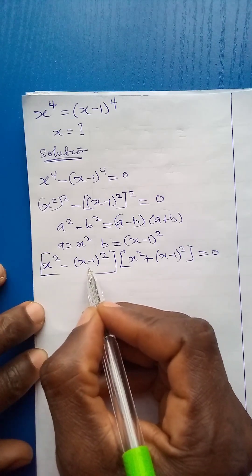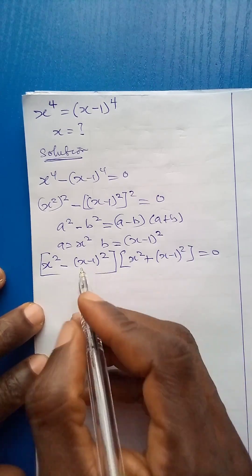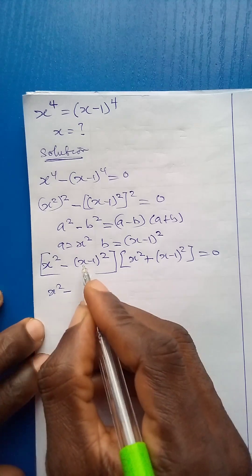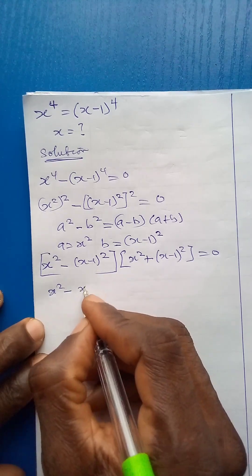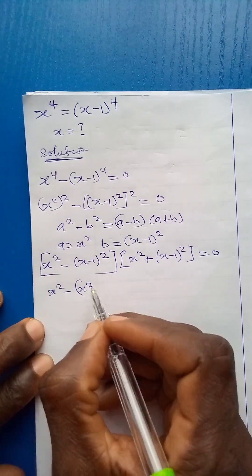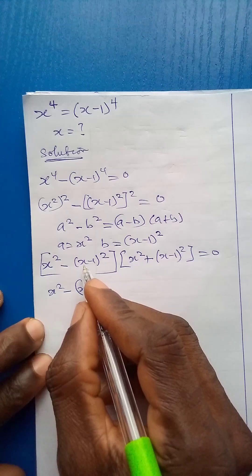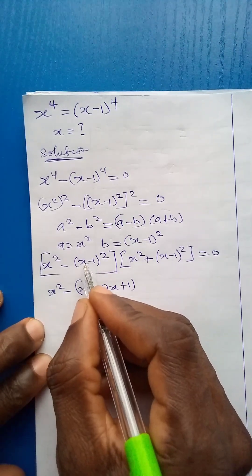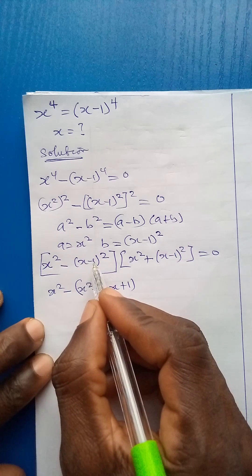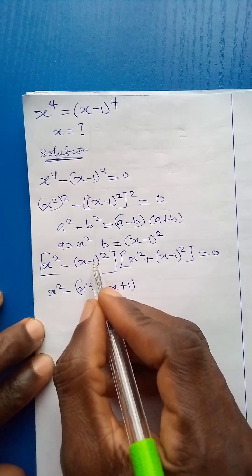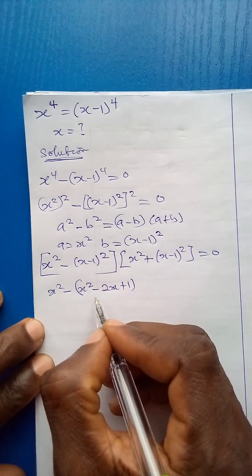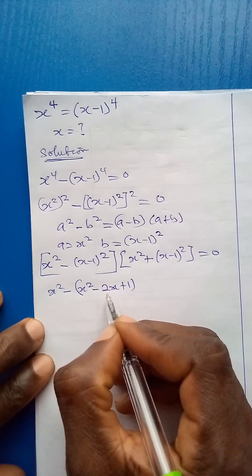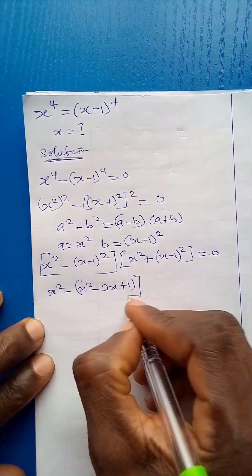Now let us expand the brackets inside. The first bracket becomes x squared minus, and expanding x minus 1 squared we get x squared minus 2x plus 1, because x times x is x squared, x times minus 1 is minus x, and minus 1 times x is another minus x, giving minus 2x altogether.